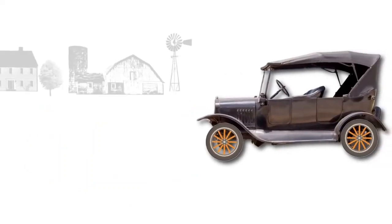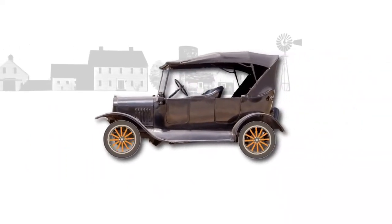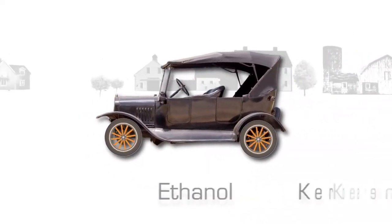Early vehicles, such as the Ford Model T, could run on a variety of fuels, such as gasoline, ethanol, and even kerosene.